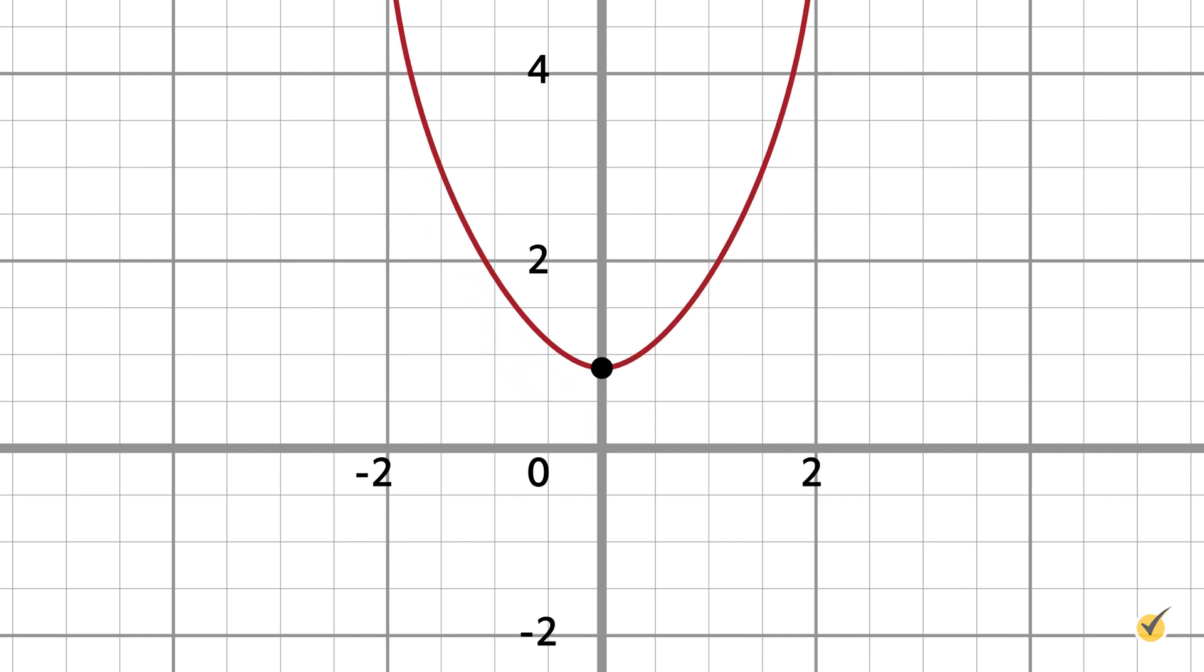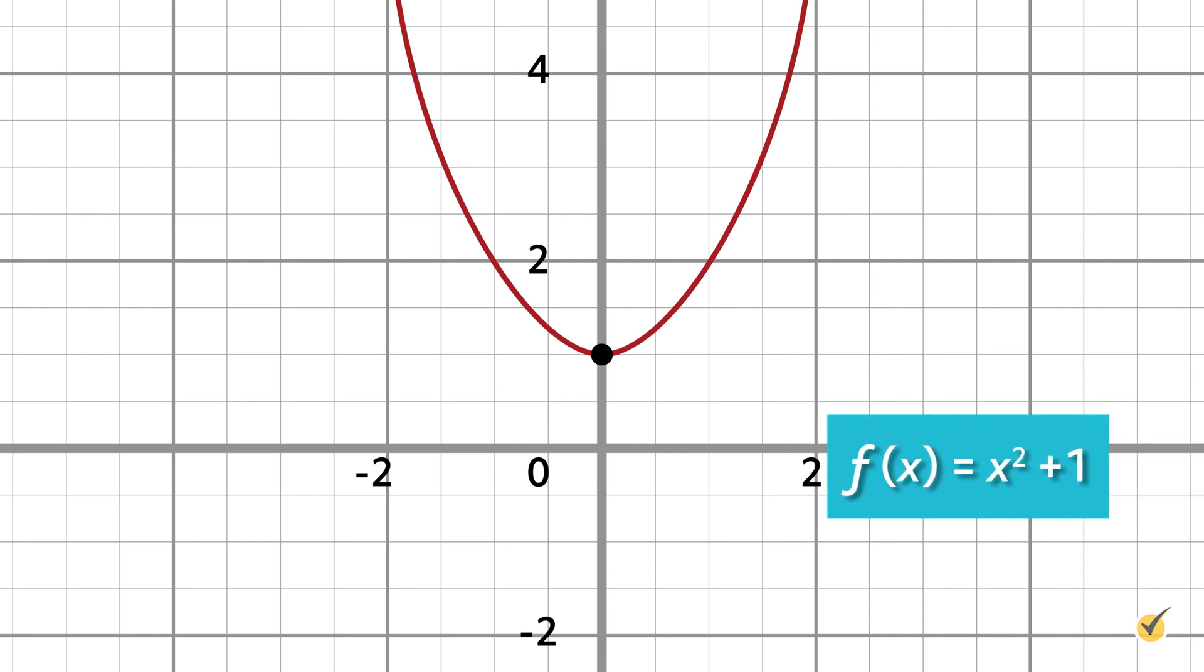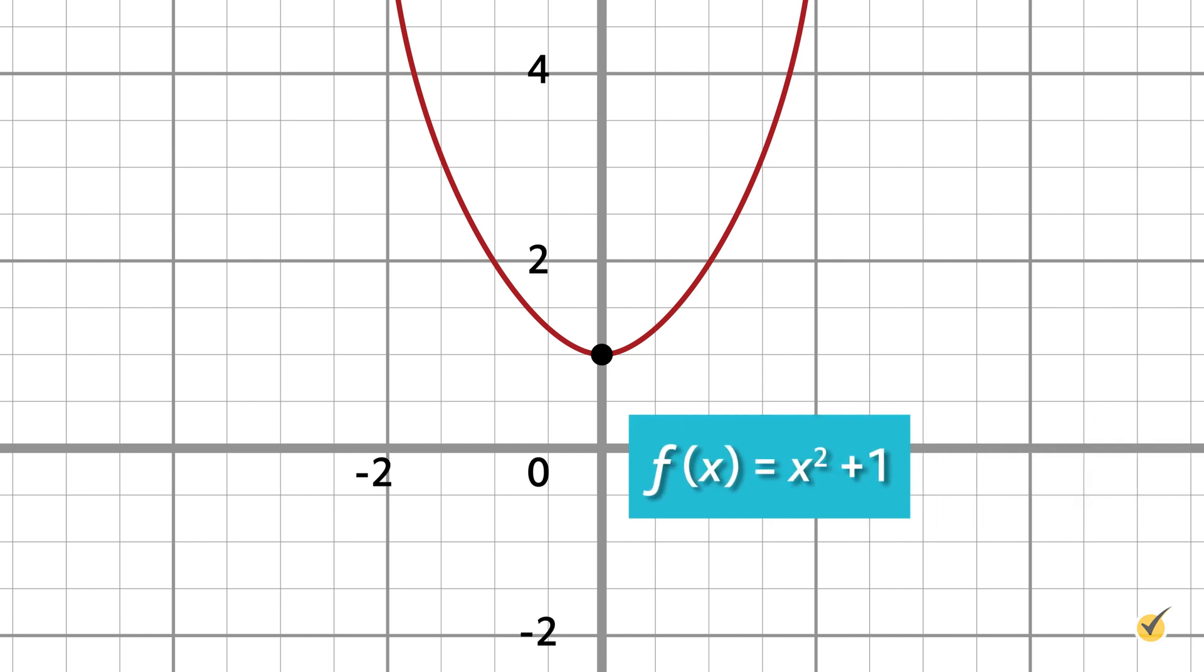Notice that if we add a constant to this function, it won't affect the shape of the function, just raise or lower it on the plane. For example, this is the graph of f equals x squared plus 1. Notice how it still has the same shape and it is still an even function. It has just been moved up one unit on the coordinate plane.